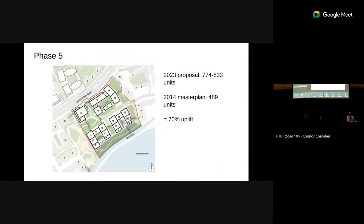Going through phase by phase: phase five is to the south of Seven Sisters Road and to the north of the reservoirs. The proposal is for approximately up to 833 units, which is about 70 more than was in the 2014 position. There is a new road proposed to provide access to residents on New Newton Close, and the development proposes two 18-storey towers in the northeast and northwest of the scheme.